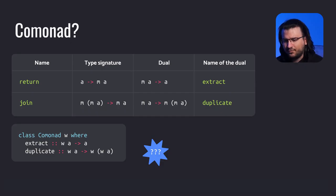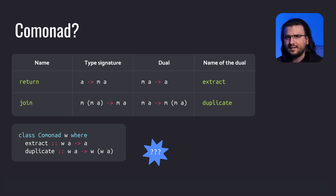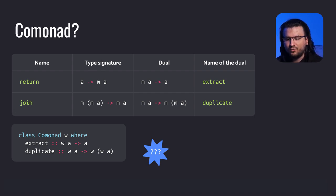Venturing into the realm of categorical duality, let's look at the type signatures of return and join. As mentioned earlier, to construct their duals we simply swap the source and the target, and we get two new functions. By looking at the type signature of the function from ma to a, we can think of it as the process of unwrapping — extracting the value from the context. The function from ma to m(ma) looks like we're wrapping our value with an additional layer of the given context. So let's give them the appropriate names: extract and duplicate.